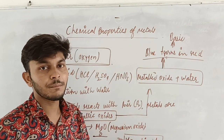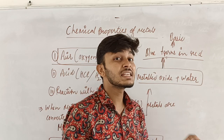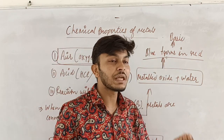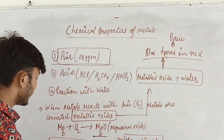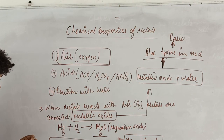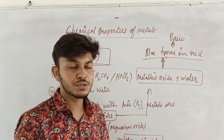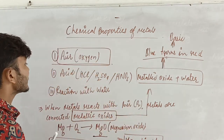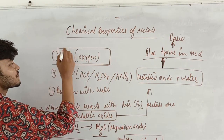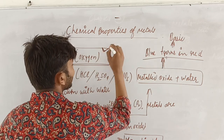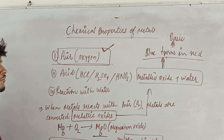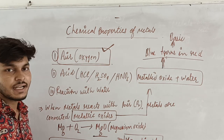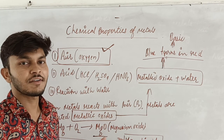Most metals are solid, but there is a metal — mercury — that is found in liquid state at room temperature. Sodium and potassium are soft and very reactive metals. This completes the first property. In the next video we will talk about the second property, reaction with acid. I hope you have understood this. Thanks, have a nice day.